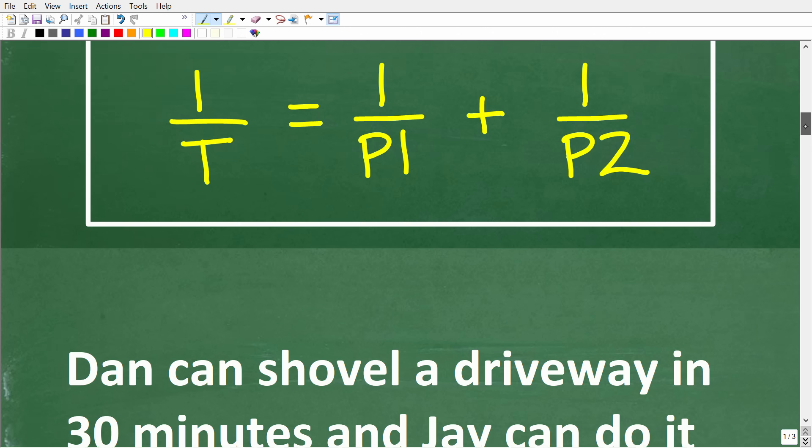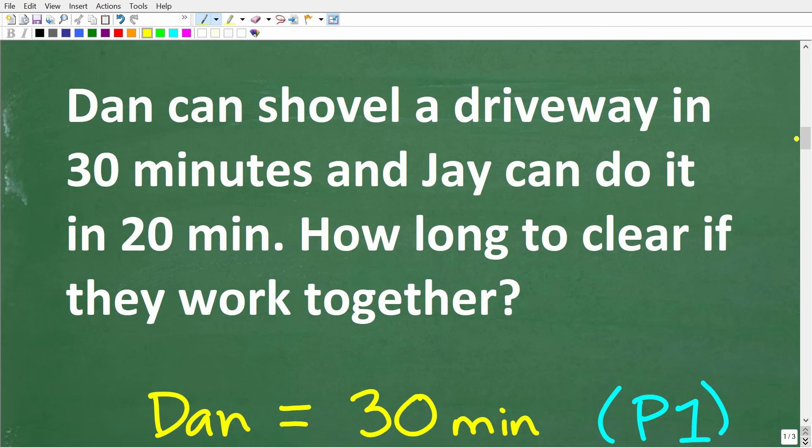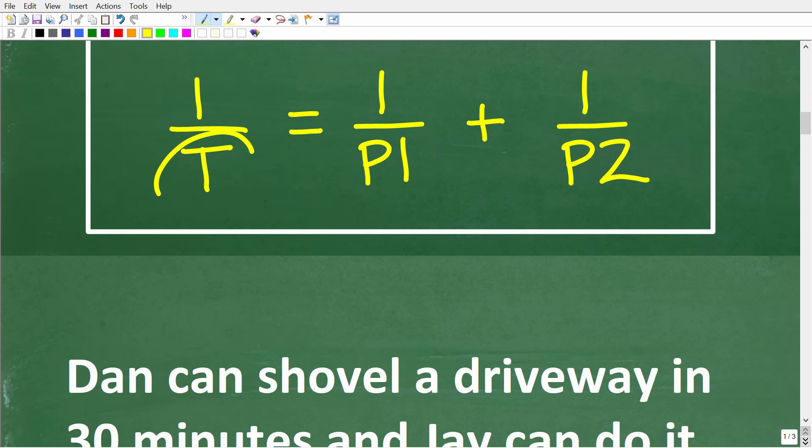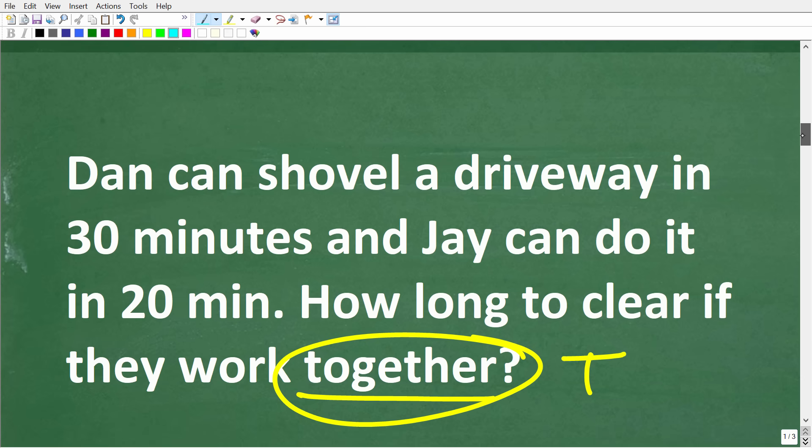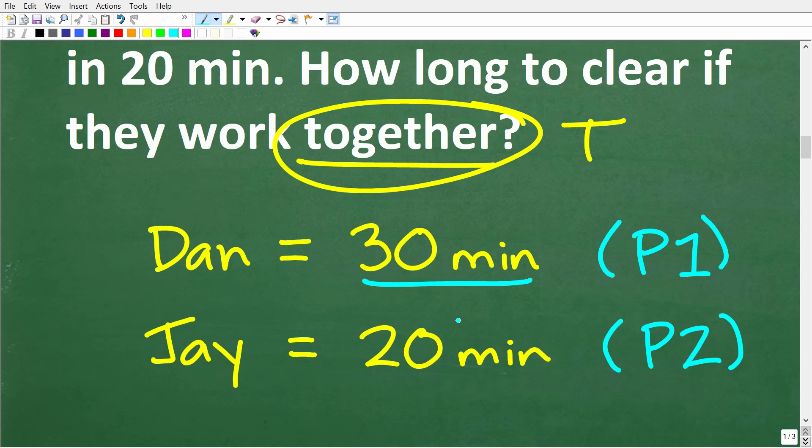So let's go to the problem and start identifying the things that we need to use in order to solve this problem. So we're looking for the time it takes for them to work together. So we're looking for this variable T in this formula right here. So what we need to do here is identify the times for each people. And when you're solving a problem like this, you want to kind of delineate. You want to write out each step. So Dan takes 30 minutes to clear the driveway or shovel the driveway in. Jay takes 20 minutes. So we'll call Dan's time P1 and we'll call Jay's time P2.